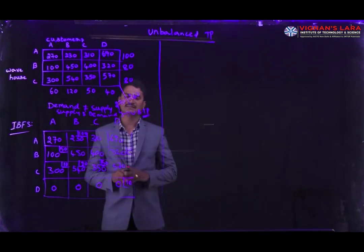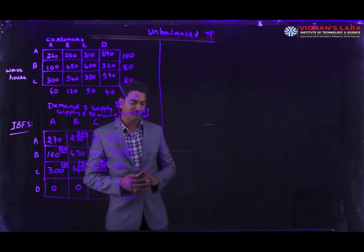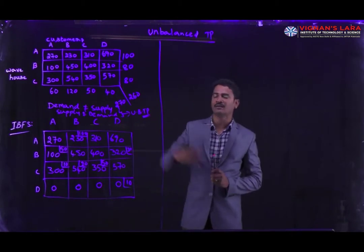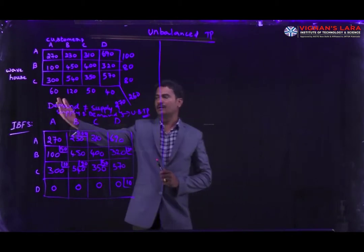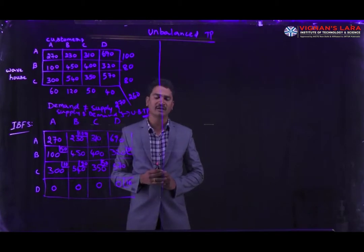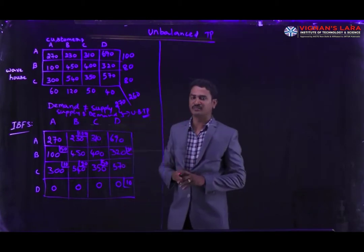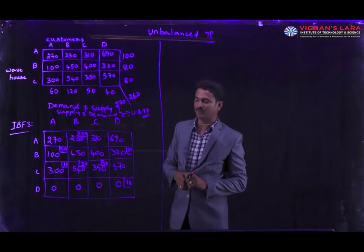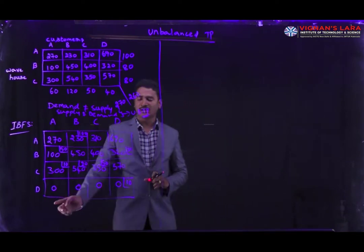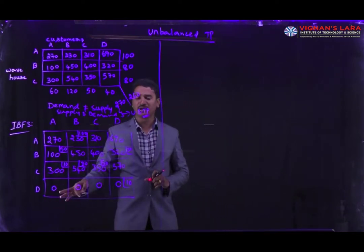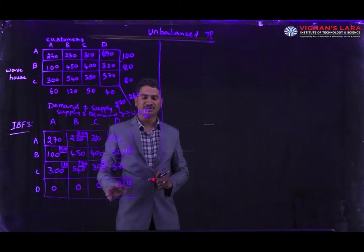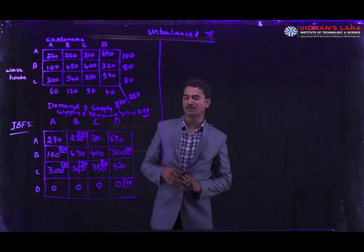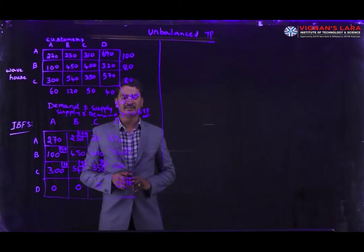Here we are going to balance the transportation by adding dummy values. Where we have the shortage — at the warehouse side — we are going to add dummy rows. I am adding the dummy rows with the value of 0. After adding the dummy rows, I am going to calculate the initial basic feasible solution.